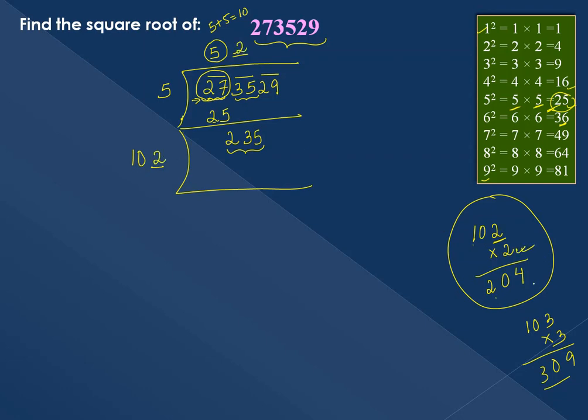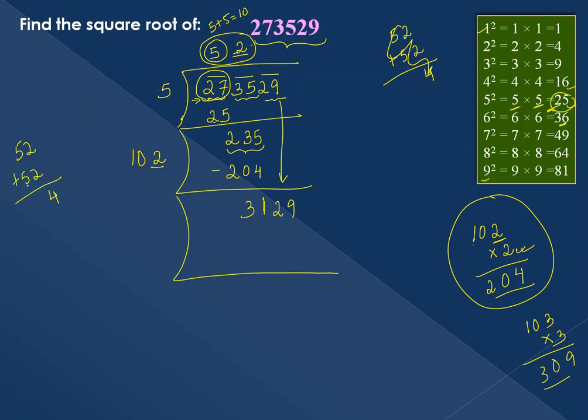235 minus 204 equals 31. Bringing down the next pair, 29, gives us 3129. The quotient is now 52. Doubling the quotient: 52 plus 52 equals 104, giving us the divisor's first three digits.